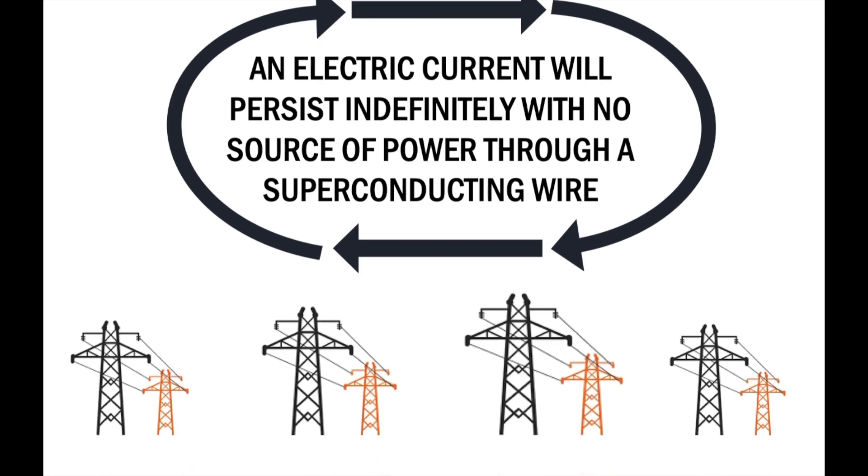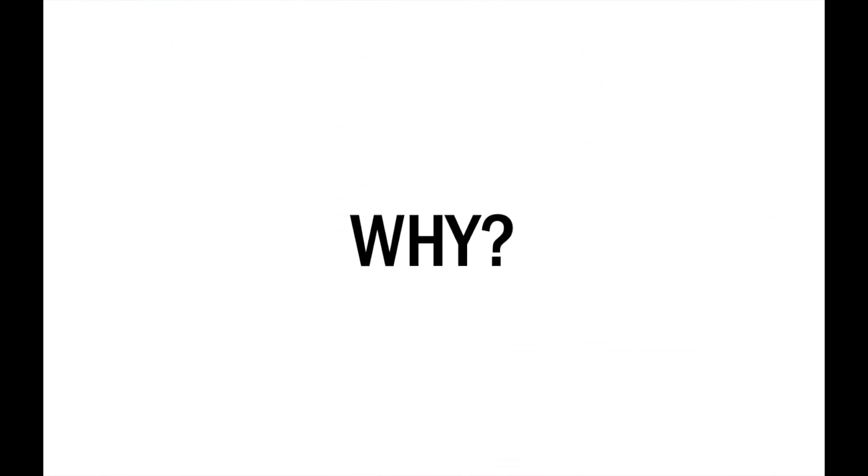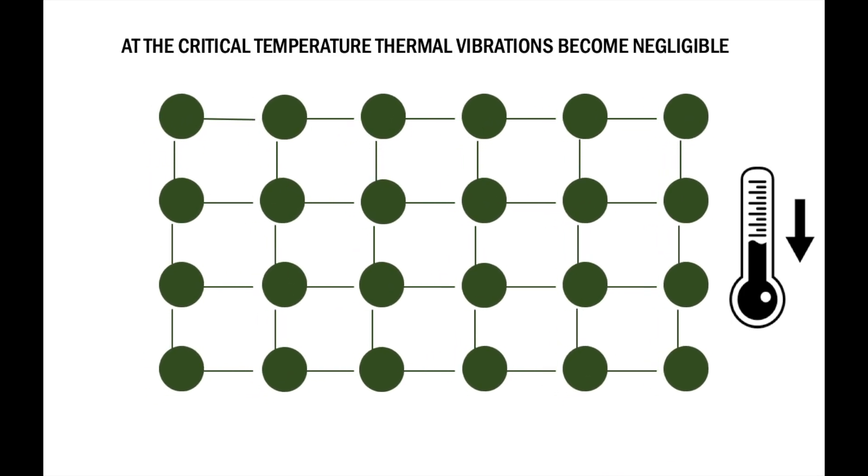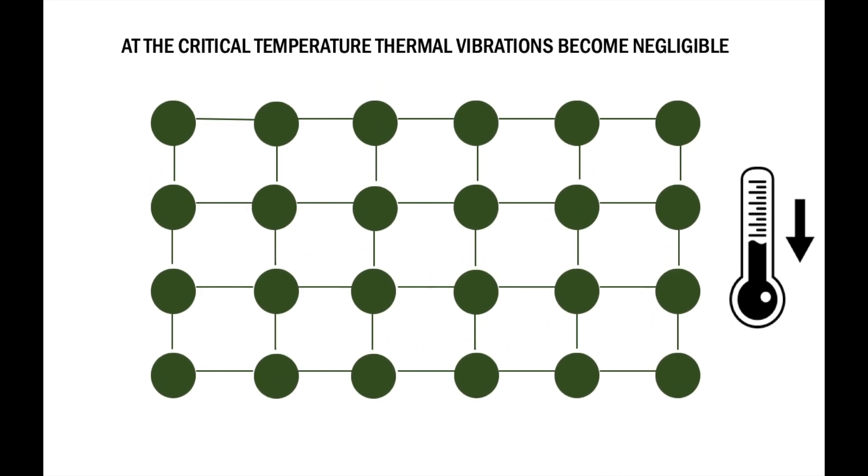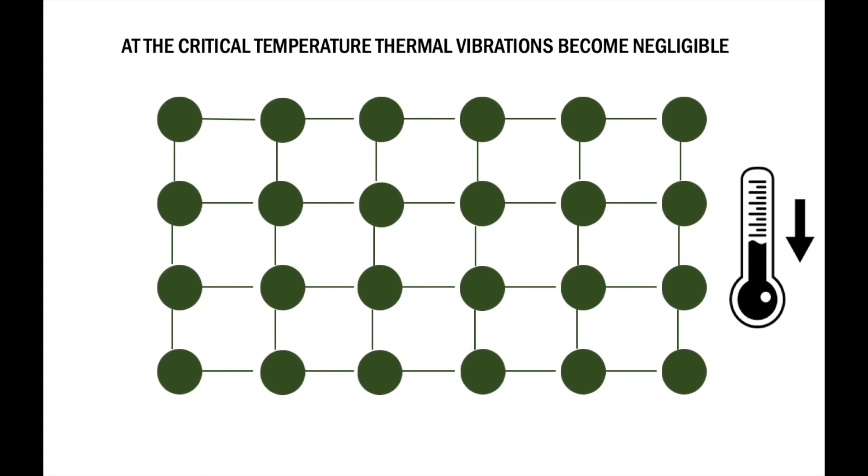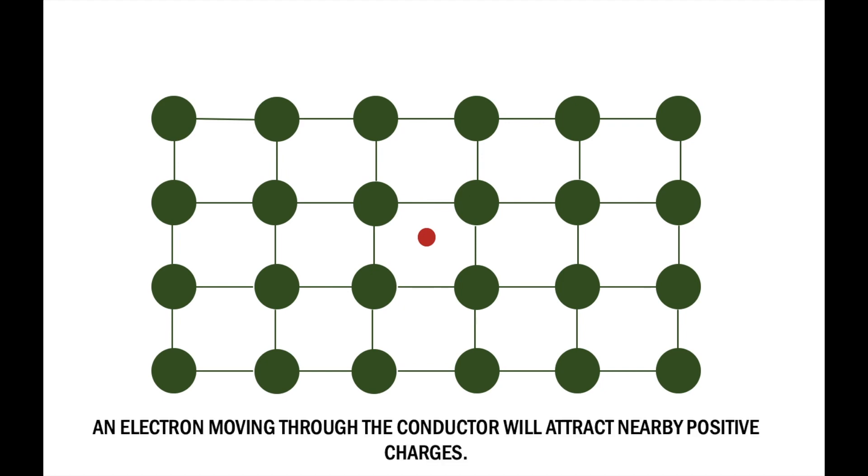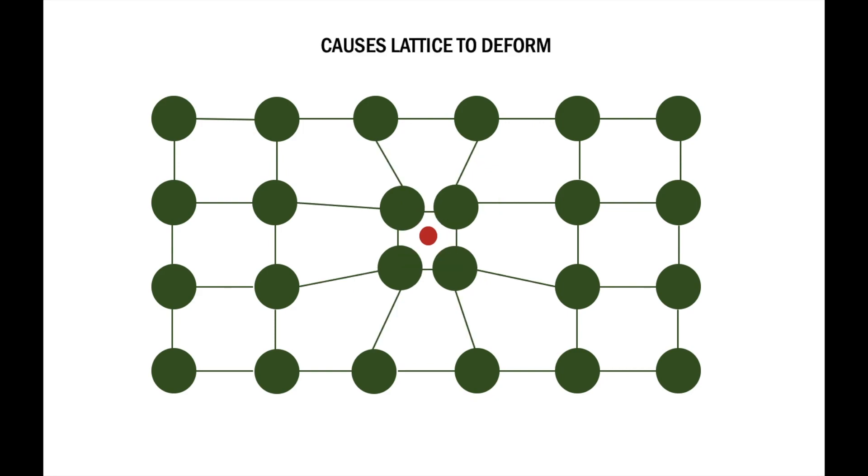But why does this happen? Let's start by looking at the lattice. As you cool it down, the thermal vibrations decrease and when you hit the critical temperature, these vibrations become negligible. As an electron moves through the conductor, the attraction between the negatively charged electron and positively charged ions of the lattice cause the structure to distort by drawing the structure towards the electron.